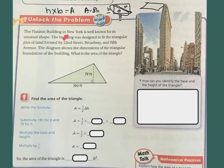The Flatiron Building in New York is well known for its unusual shape. The building was designed to fit the triangular plot of land formed by 22nd Street, Broadway, and 5th Avenue. The diagram shows the dimensions of the triangular foundation of the building. What is the area of the triangle? So here's my base, and here's my height. So remember it's base times height, and then you divide it by 2. So the formula is area equals half base times height.